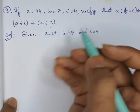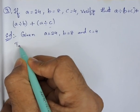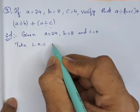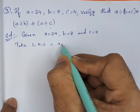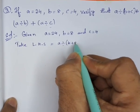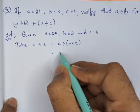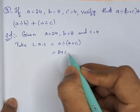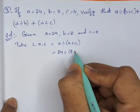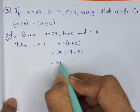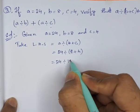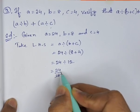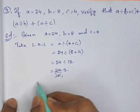Take LHS, so here LHS is a divided by (b plus c). What is a? a is 24, divided by b plus c. b is 8 plus c is 4, so 24 divided by 12. 24 by 12 equals 2.